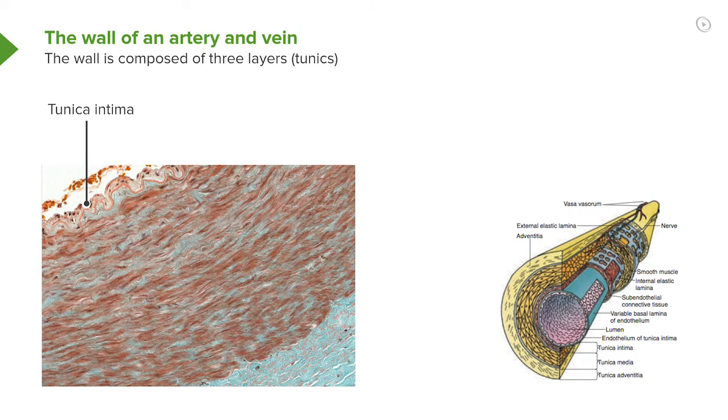The layer of the blood vessel closest to the lumen is called the tunica intima. Tunica just means a layer or a coat. Intima, it's the most intimate layer in relation to the lumen of the blood vessel.